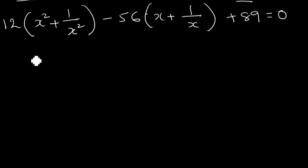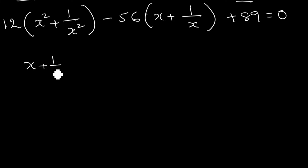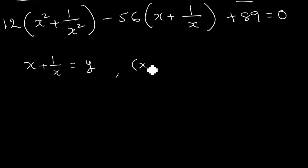Now let's take x + 1/x equal to another variable y. To find x² + 1/x², let's expand (x + 1/x) whole square. Using the identity (a + b)² = a² + b² + 2ab, it becomes x² + 1/x² + 2 × x × 1/x.